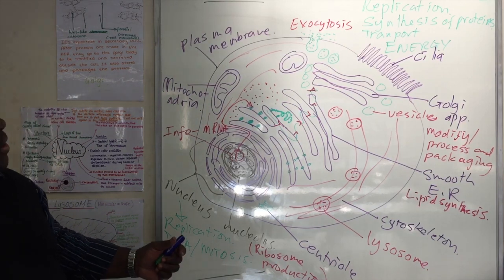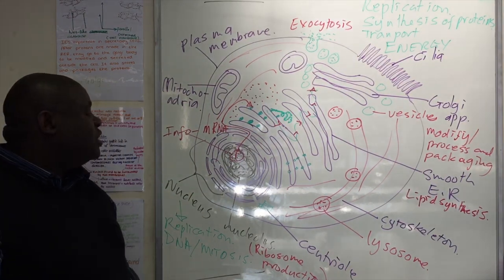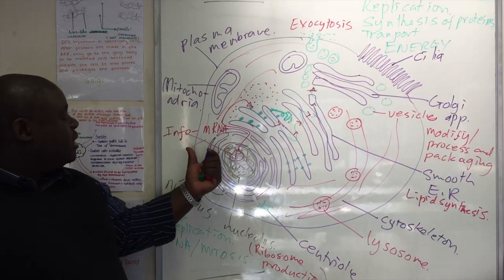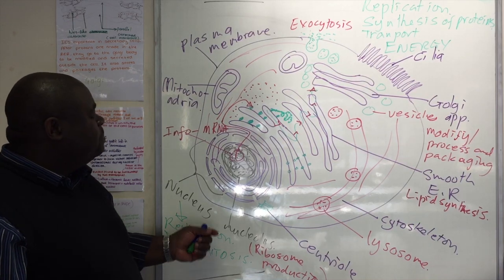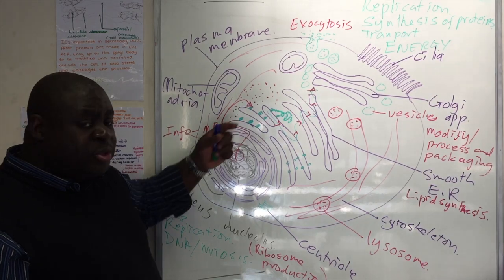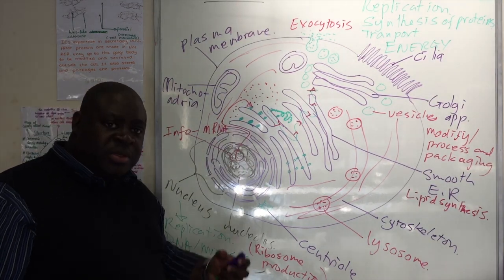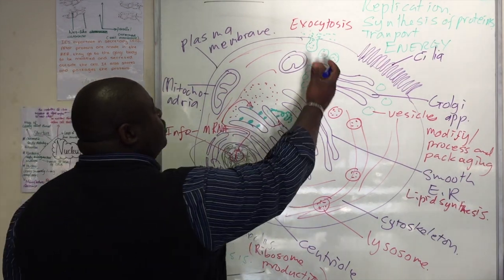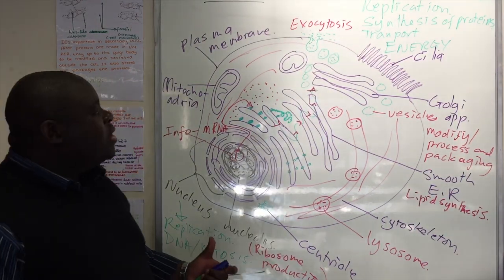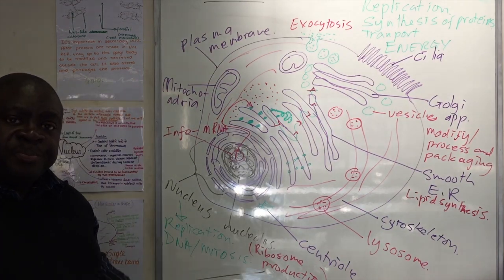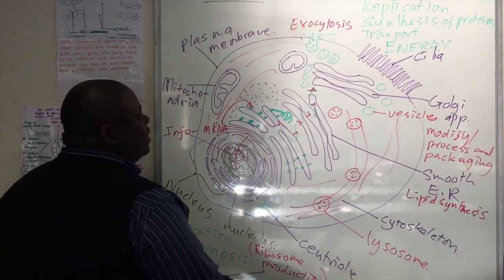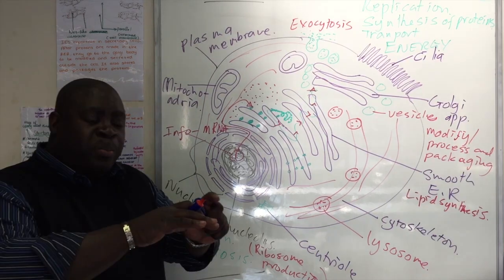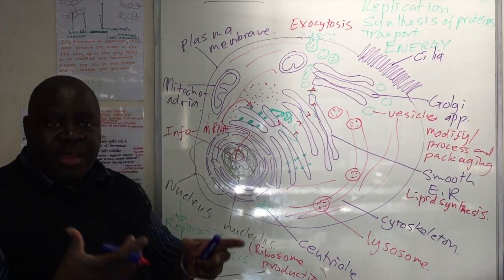In the process of protein synthesis and transport, let's review how many organelles we've mentioned. One: the nucleolus producing the ribosomes. Two: the nucleus, where the DNA is copied in the form of mRNA. Three: the mRNA joining up with the ribosome — the next organelle — which then synthesizes the protein by joining amino acids together. Then the protein is transported through the rough ER and through the smooth ER to the Golgi apparatus. The Golgi apparatus, made up of stacks of membranes, modifies, processes, and packages material made in the cell — putting a membrane around the product so it doesn't interfere with other processes within the cell.